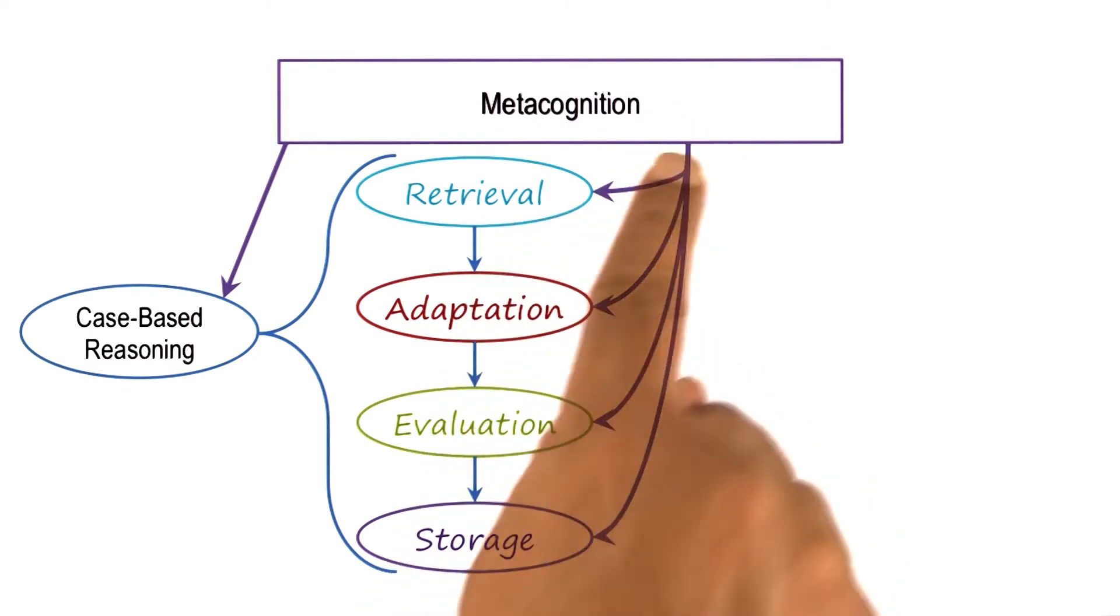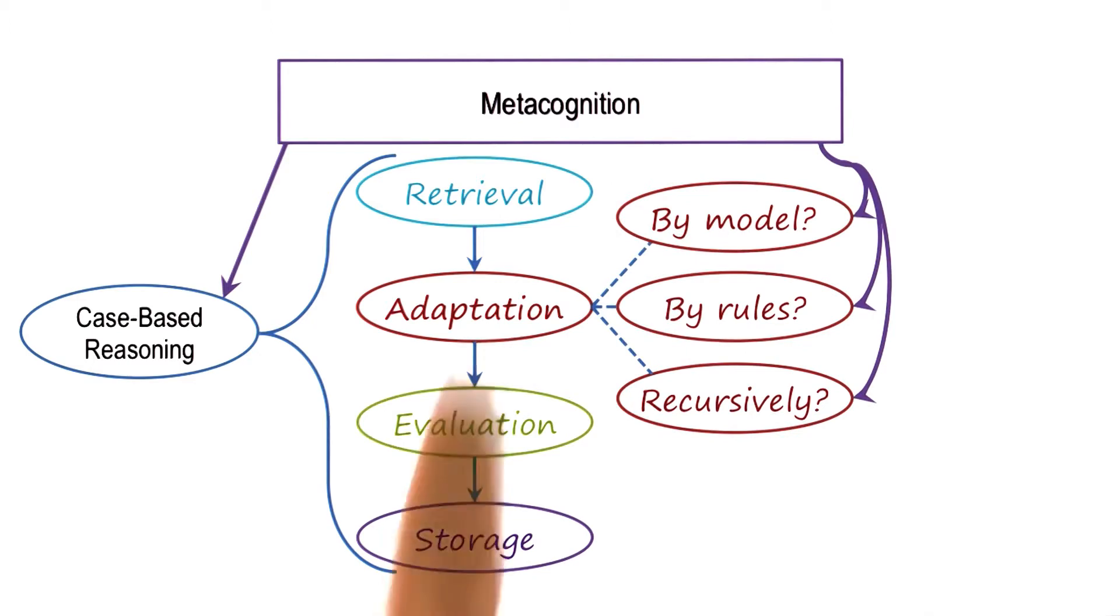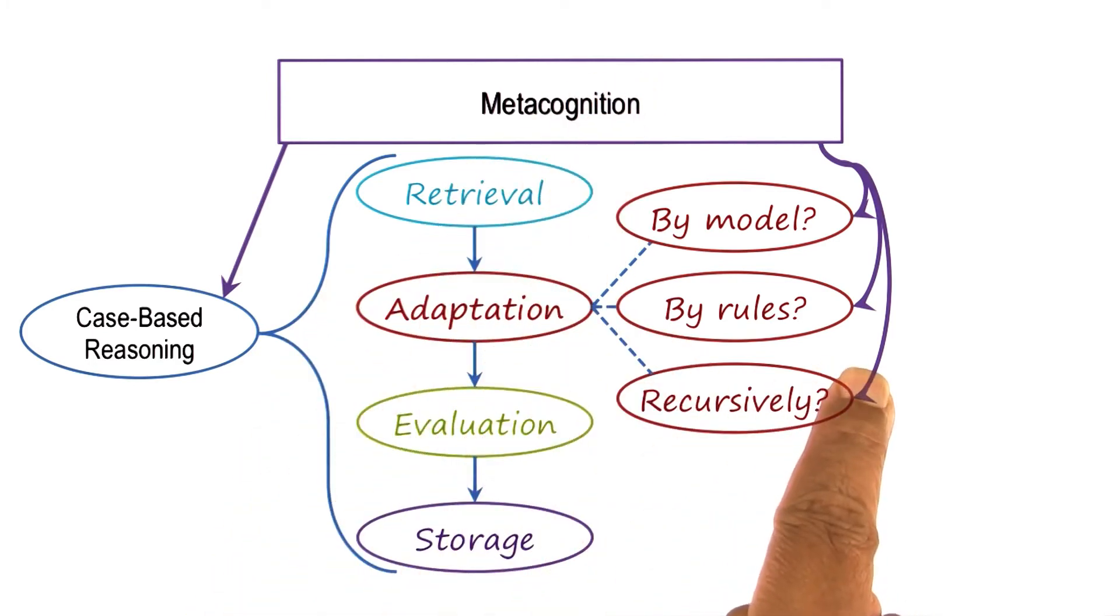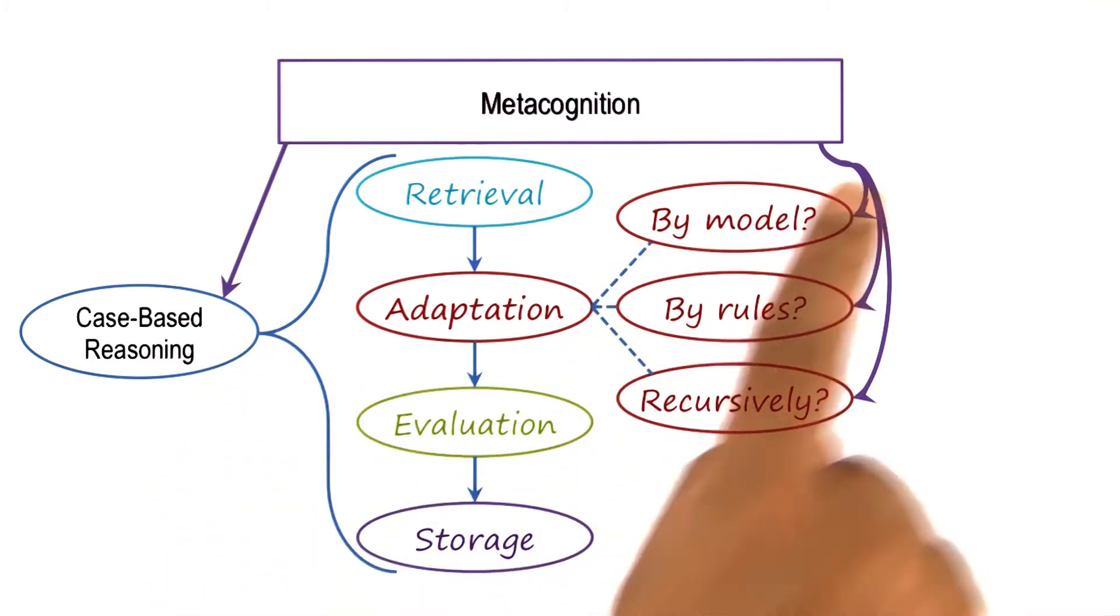Metacognition can now examine the requirements for each of the subtasks. And then, for each of the subtasks, it may decide on some strategy. For example, for the task of adaptation, metacognition may pick the method of case-based reasoning recursively, or it may pick the method of rules to adapt a case, or it may use models for the case adaptation.